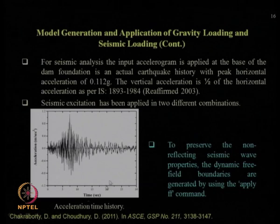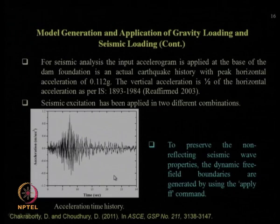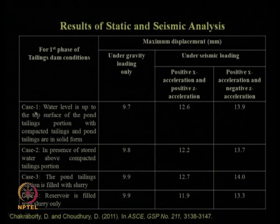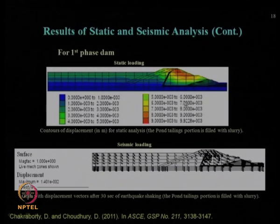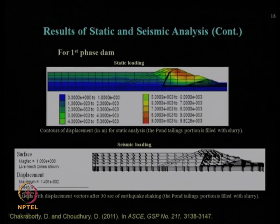The Taft earthquake was used as the input motion in FLAC software to provide seismic excitation. After giving this seismic excitation of acceleration versus time history, we get the maximum displacement in static and seismic conditions for the first phase of the tailing dam for various loading combinations. This is the FLAC displacement contour for the static case under gravity loading, showing displacement behavior at various portions of the dam. Also, under seismic loading after 30 seconds of earthquake shaking, the displacement vector results are available for the first phase.